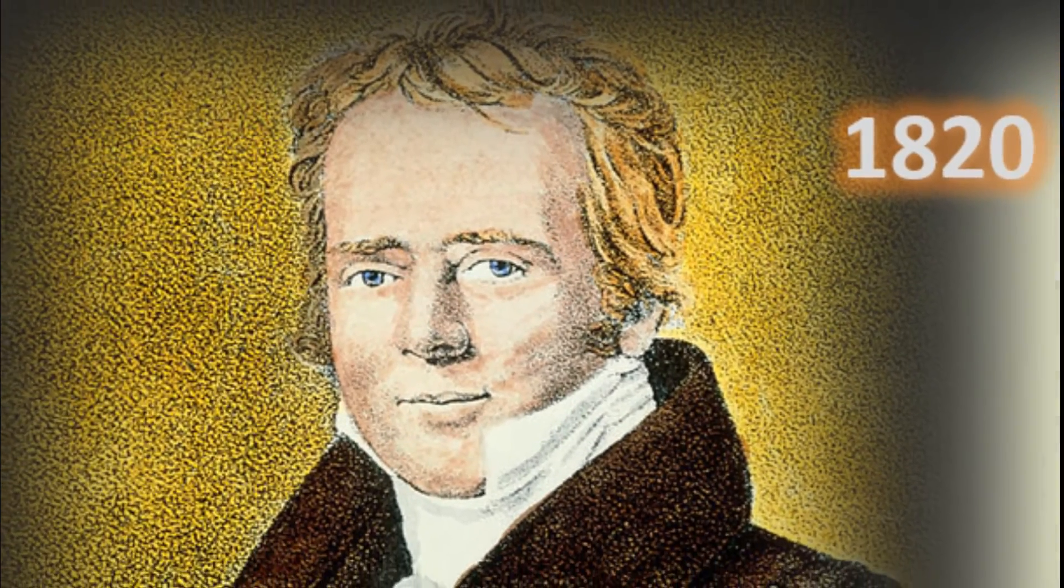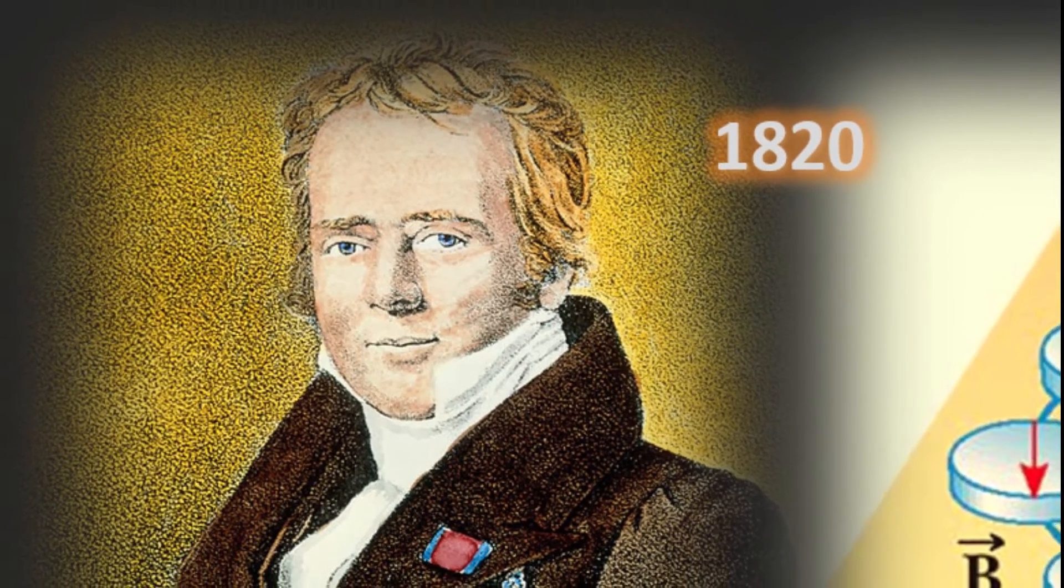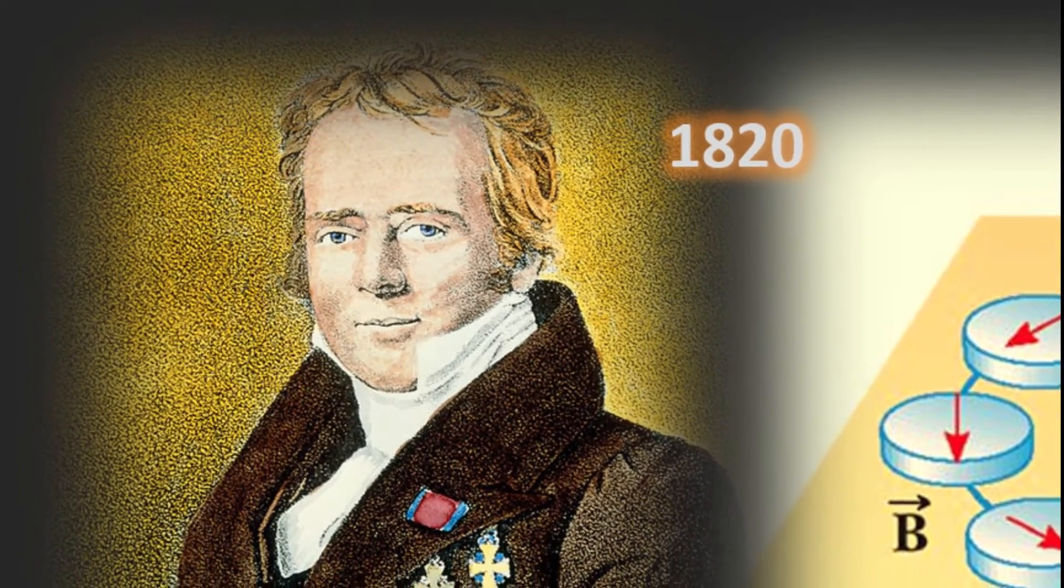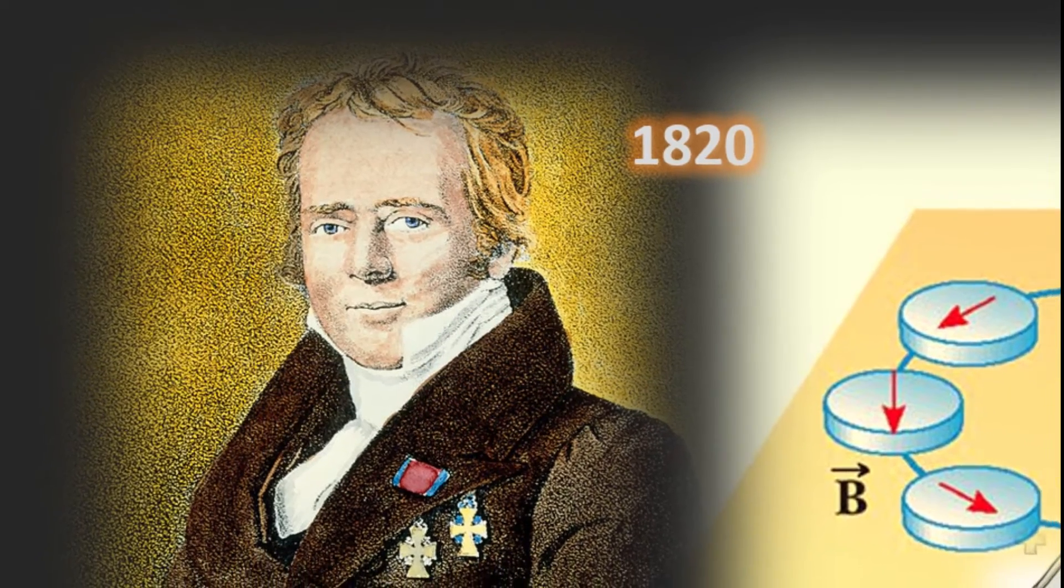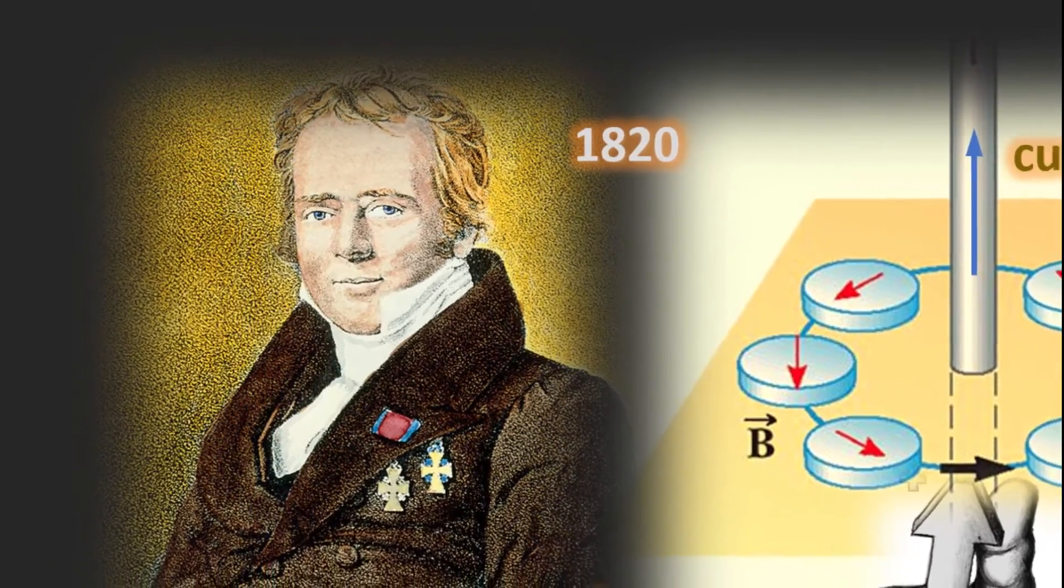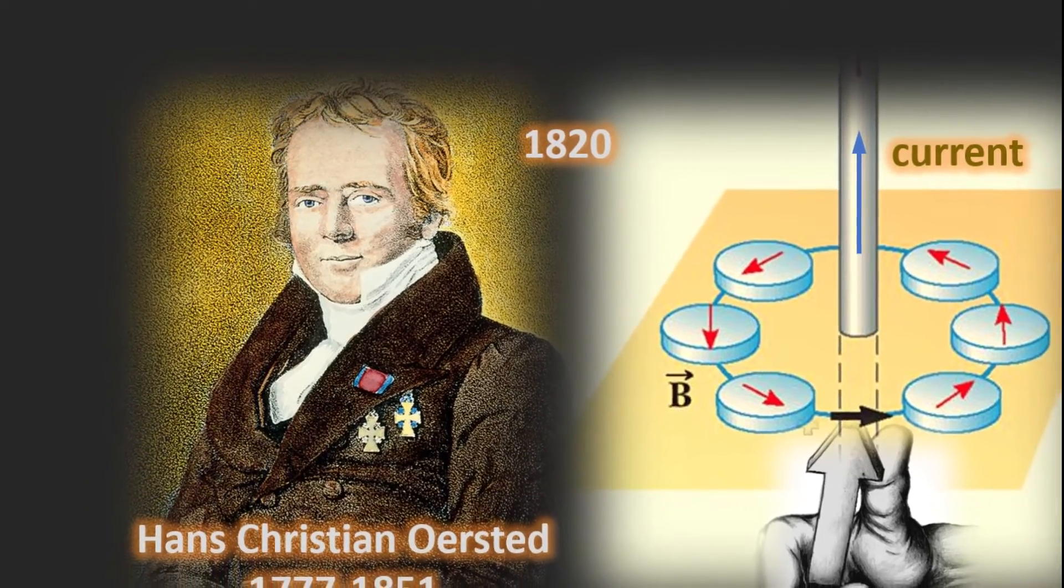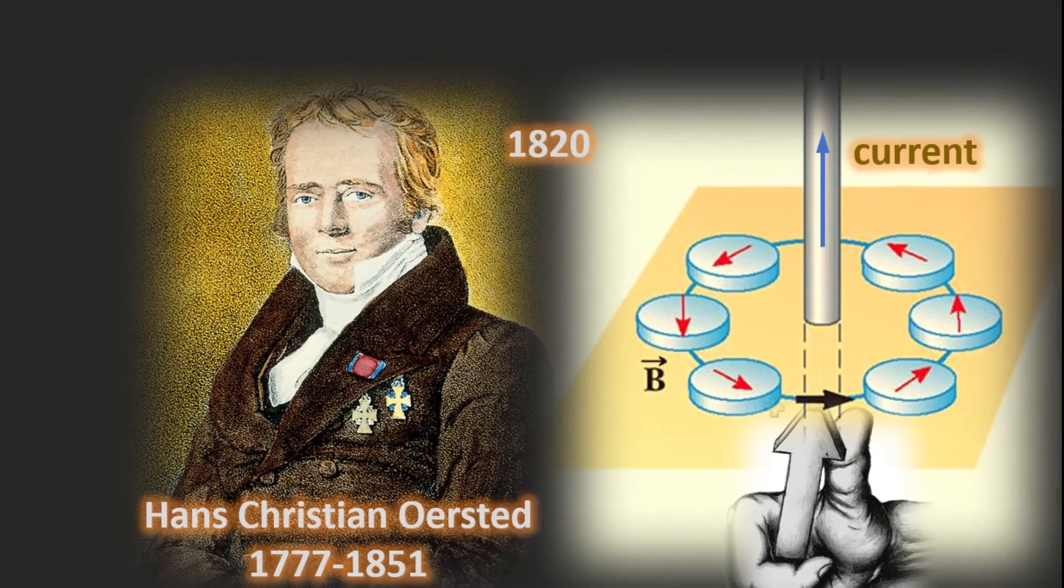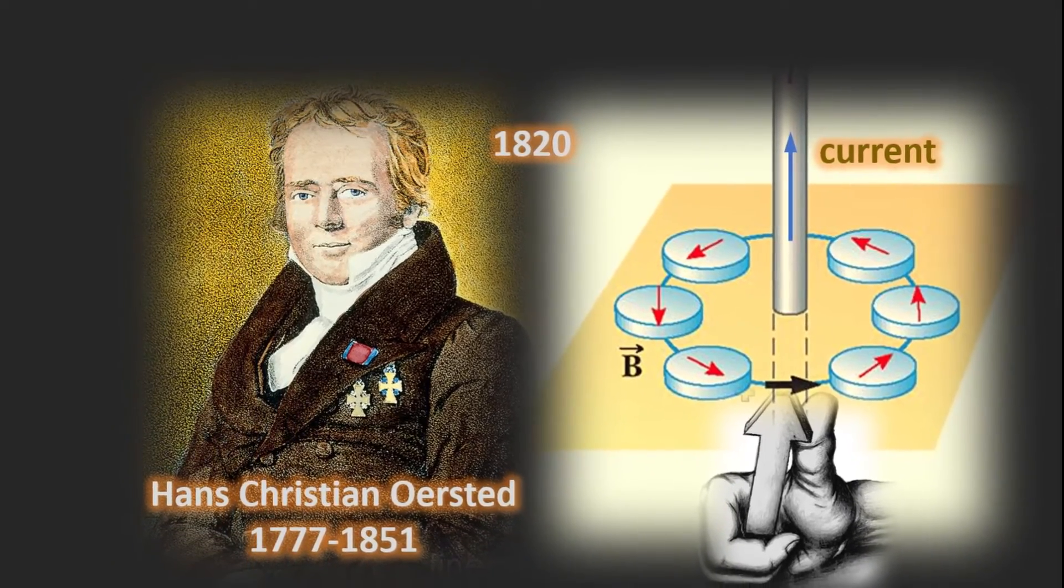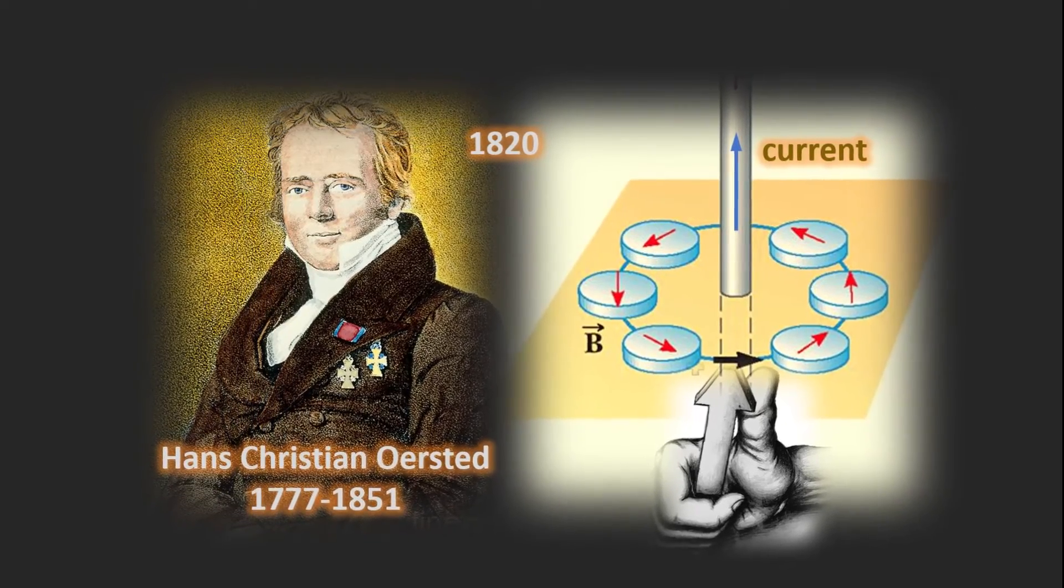Our story begins in 1820 when the Danish physicist and chemist Hans Christian Oersted discovered that a compass needle was deflected from magnetic north by a nearby electric current. The compass needle points in a circular manner in a direction described by the so-called right thumb rule. Oersted's experiment confirmed a direct relationship between electricity and magnetism. Electromagnetism or electrodynamics was born.